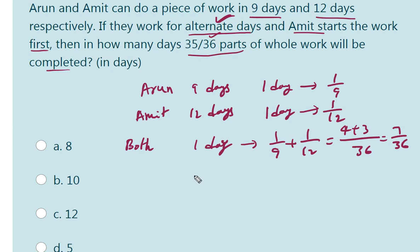So, they need 5 alternative days. Because 7 by 36 into 5 is equal to 35 by 36. They need 5 alternative days. So, how many continuous days they need? 5 into 2. That is 10 days they need.